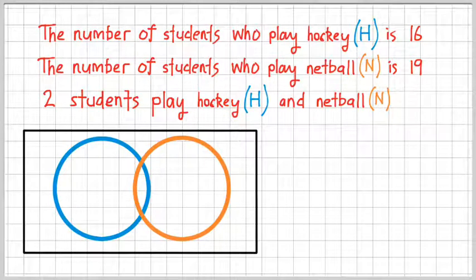And the reason is because we've got some students who play both hockey and netball. So if you look carefully, that region in the middle, or that part in the middle where the two circles cross each other or overlap, that represents the students who play both sports. So now let's label what we've got here. Two students who play hockey and netball.